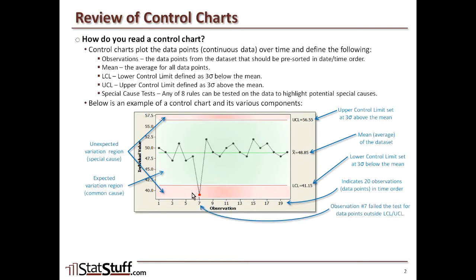We also see in this example, there's one data point that falls below into that area. So we can say for this observation number seven, it failed the test because the data point fell outside of the lower or upper control limit area.